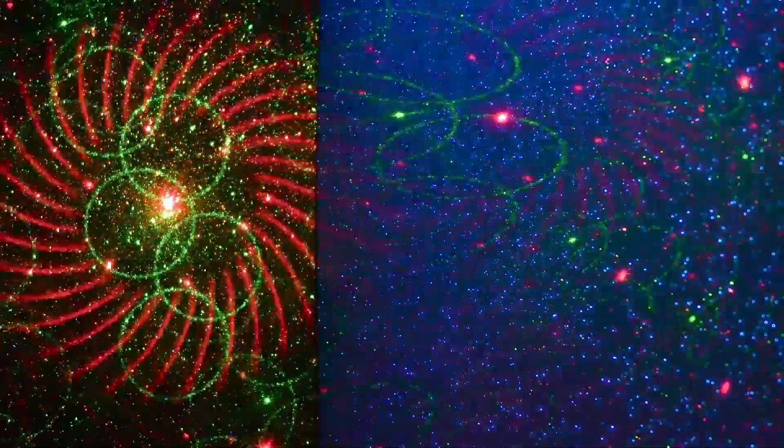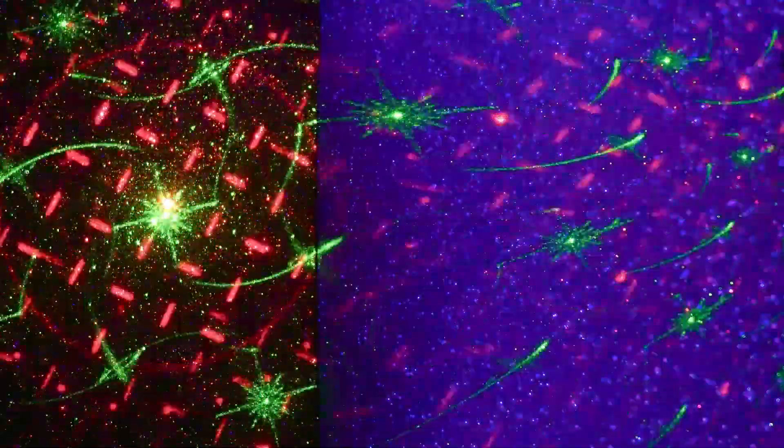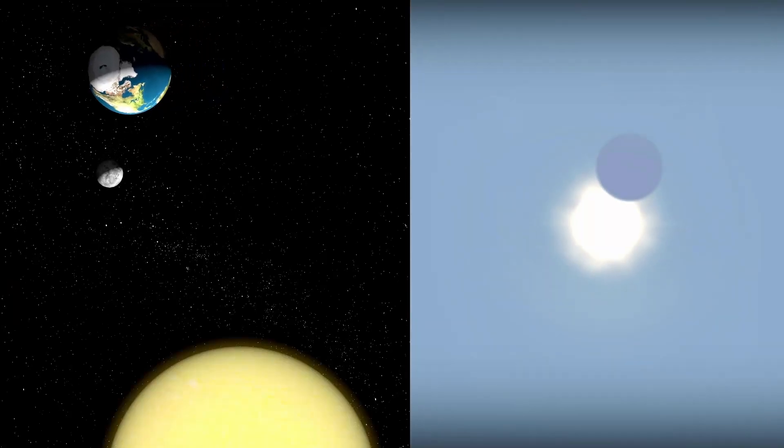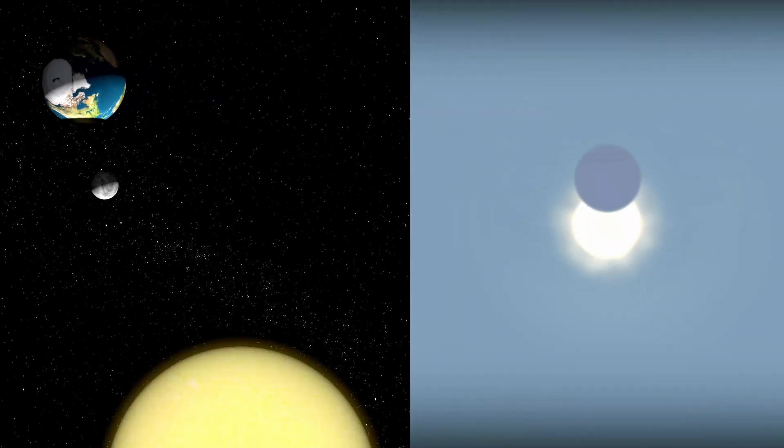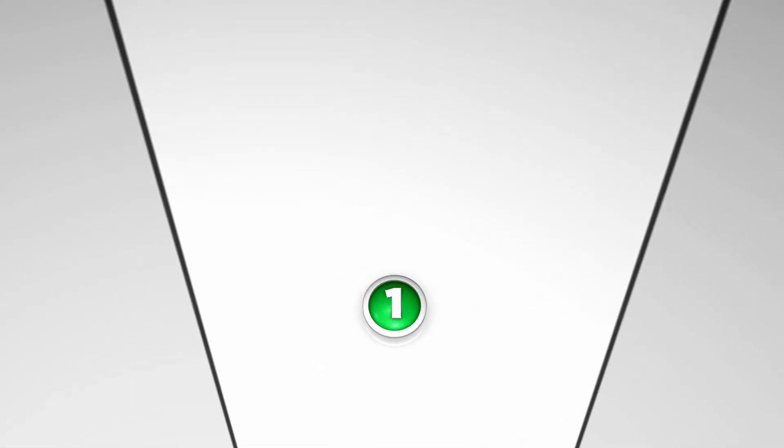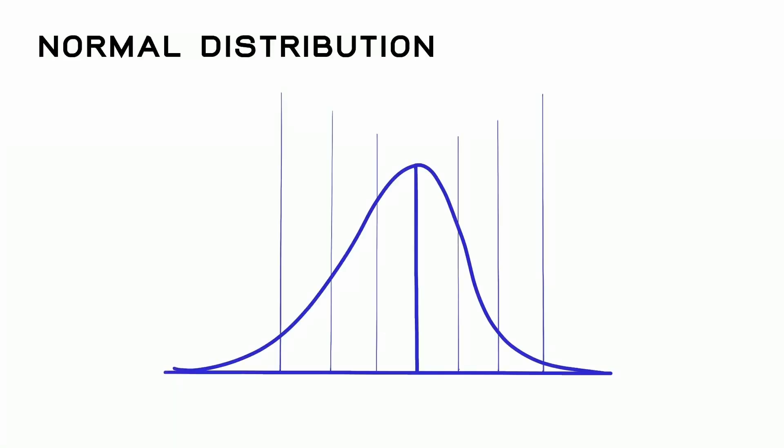The question isn't whether 3i Atlas could split anymore. We watched it happen. The real questions are, why did it divide itself and what happens when both fragments reach Earth at the same time? Let's examine exactly what happened during the split, because the details reveal this was absolutely intentional and meticulously planned.